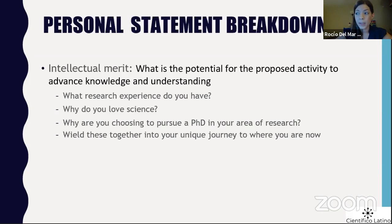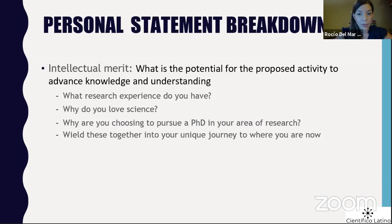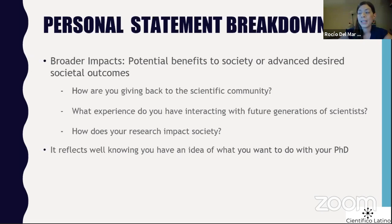Two things that come up in both the personal and research plan are intellectual merit and broader impacts. Intellectual merit is essentially how you're going to advance knowledge — how you envision yourself contributing to the field and society in general. Here you should talk about your research experiences, why science is important to you, why you chose this career, why you're pursuing a PhD in your particular area of research, and whether you plan to expand on that in the future. Make a compelling story that will interest reviewers and show that you have clear plans.